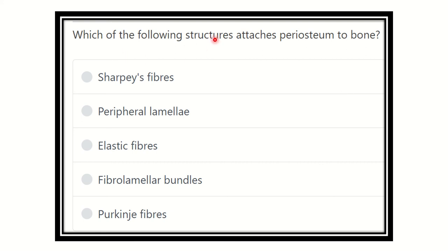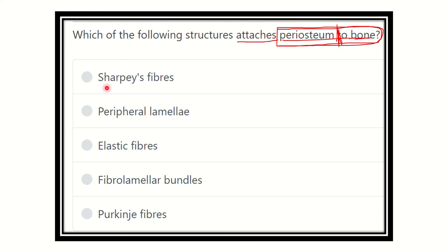Which of the following structures attaches periosteum to the bone? This is a direct question. The options are: Sharpey's fiber, peripheral lamella, elastic fibers, fibro-lamellar bundles, and Parkinson fiber. We have to find the structure located between the periosteum and the bone.